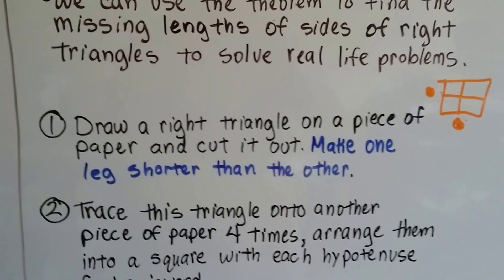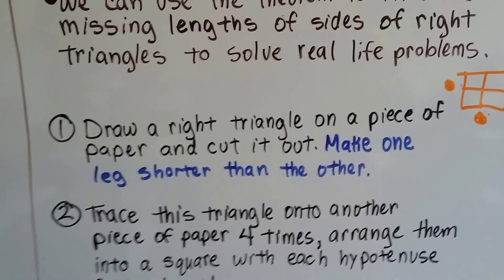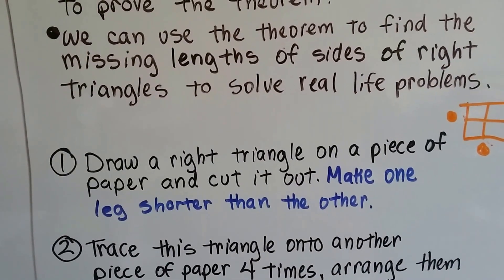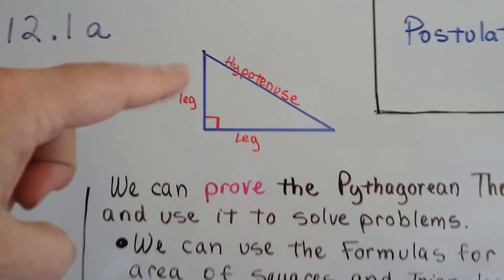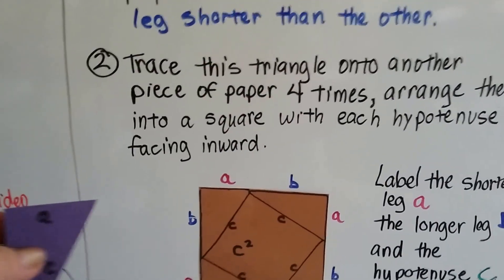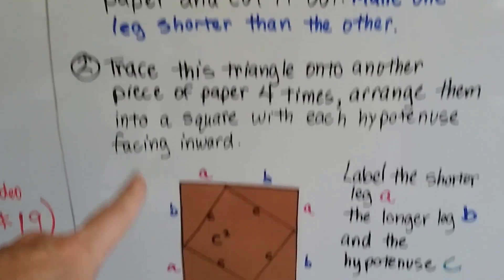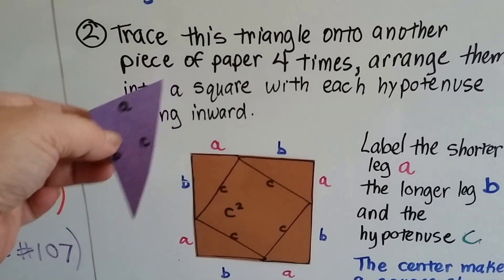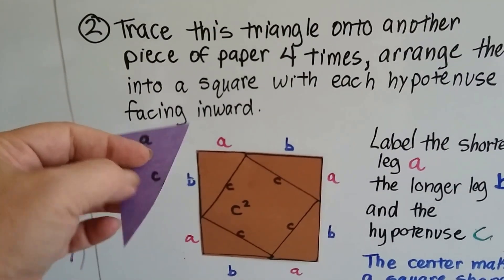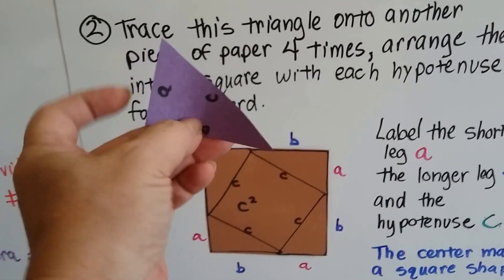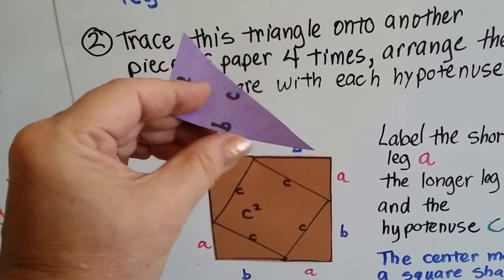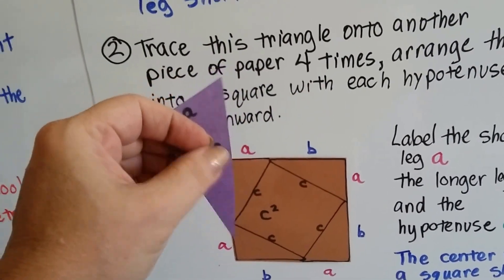We're going to draw a right triangle on a piece of paper, and we're going to cut it out and make one leg shorter than the other. I've got my little piece right here that I cut out. I'm going to trace this triangle onto another piece of paper 4 times. And arrange them into a square, with each hypotenuse, this long side, C, facing inward. You can see the short side's A, and the long leg is B, and the hypotenuse is C.